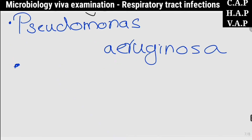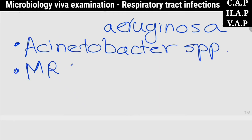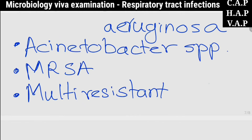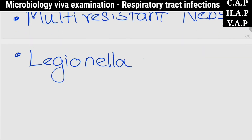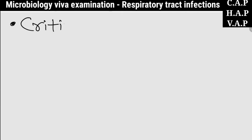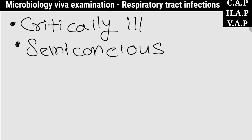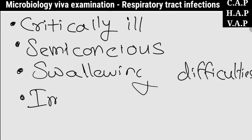Common pathogens causing ventilator-associated pneumonia include Pseudomonas aeruginosa, Acinetobacter species, methicillin-resistant Staphylococcus aureus, multi-resistant Klebsiella, and anaerobes. Patients normally susceptible to hospital-acquired pneumonia include critically ill patients, semi-conscious patients, patients with swallowing difficulties, and patients with immunodeficiency.